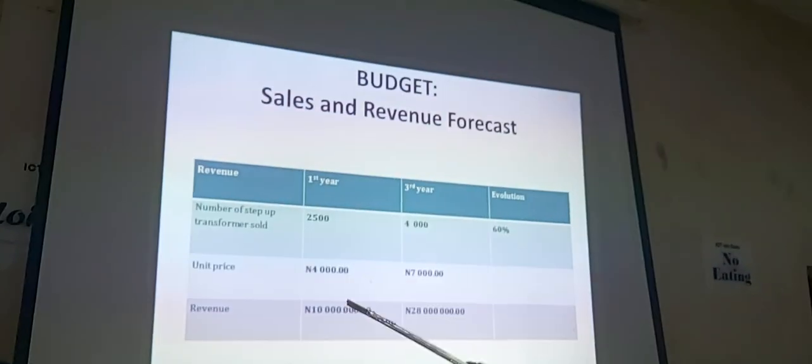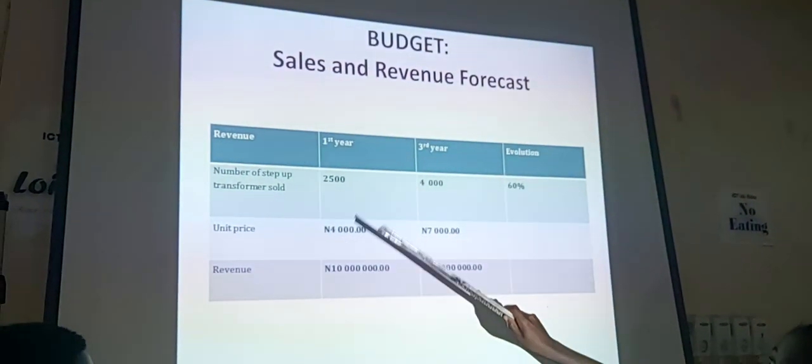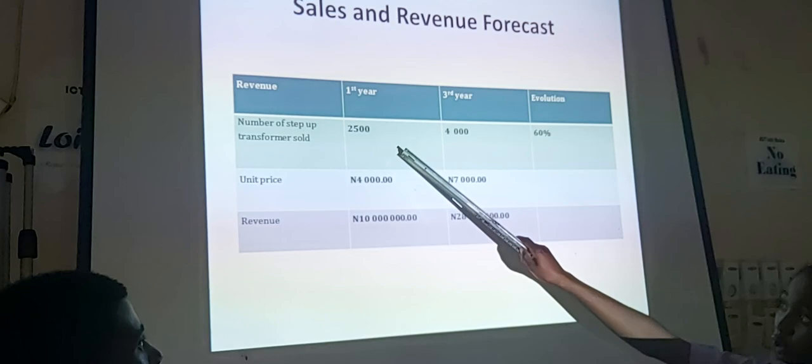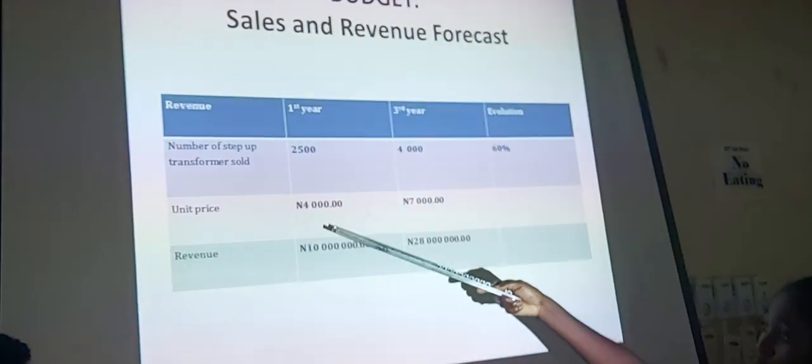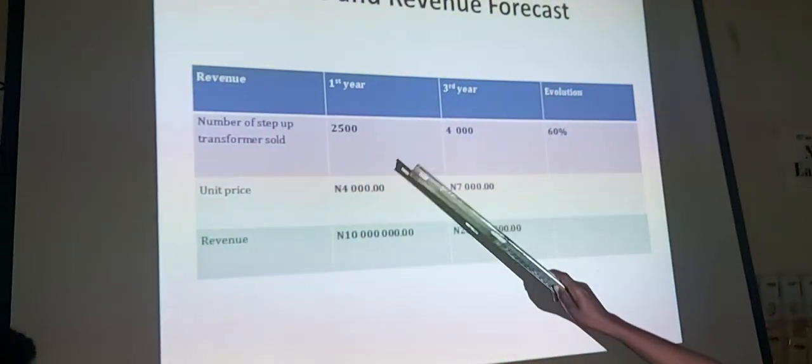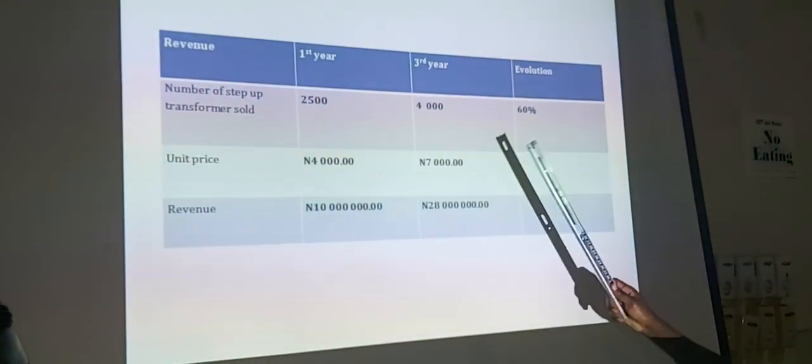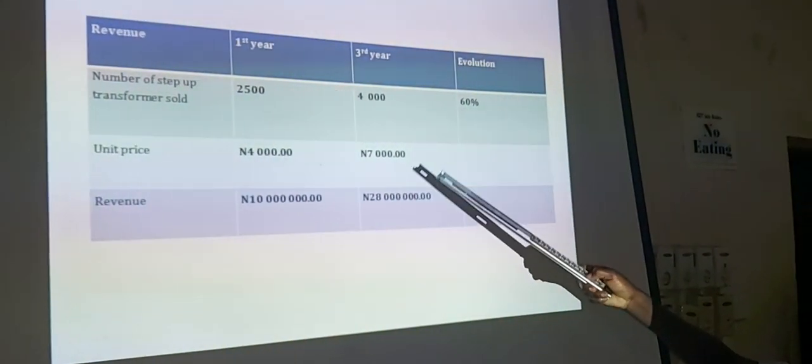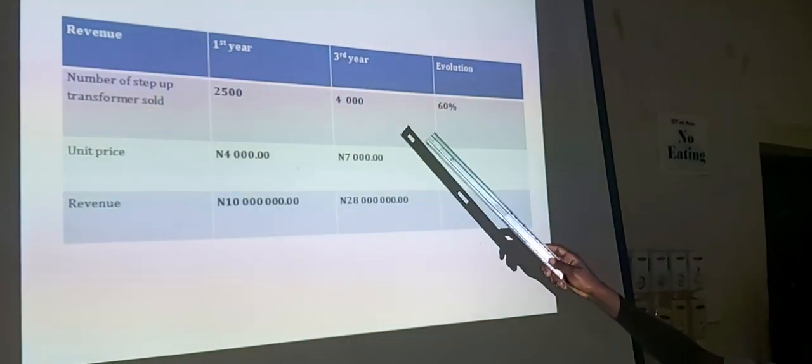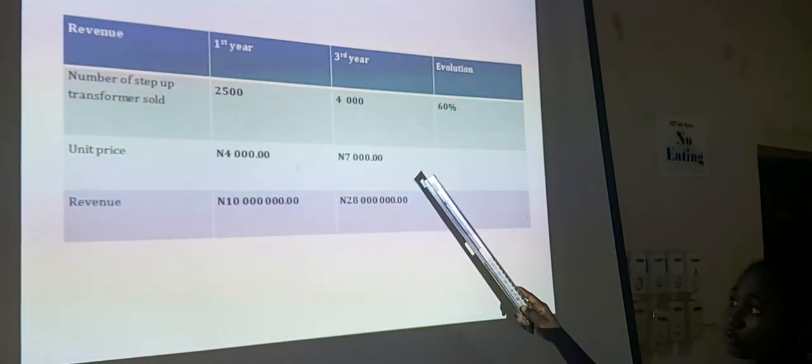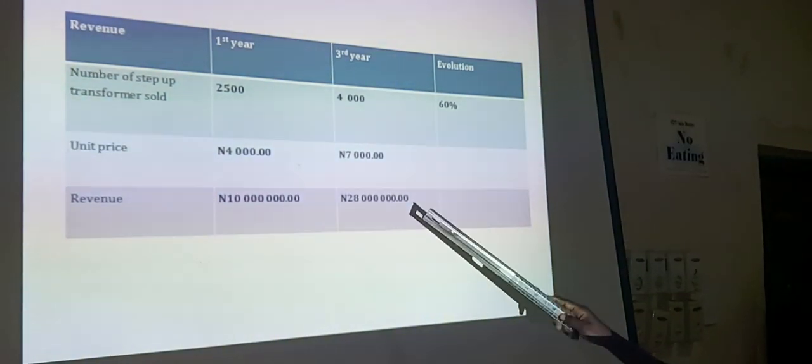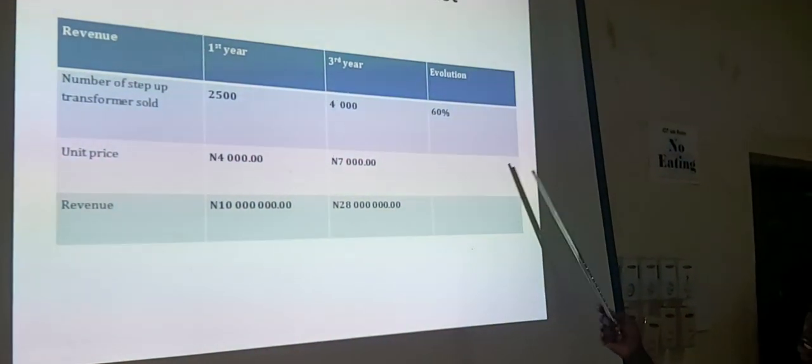For the sales, the 2,500 units will be sold at 4,000 Naira per unit, with revenue of 10 million Naira. Then by the third year, the number of step-up transformers sold would be 4,000 with the unit price of 7,000 and the revenue swing to 28 million Naira with 60% gain.